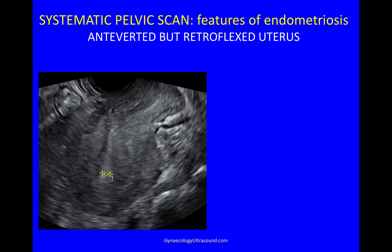In this scan, you can see that the uterus is anteverted but retroflexed, and this is due to adhesions behind the uterus.